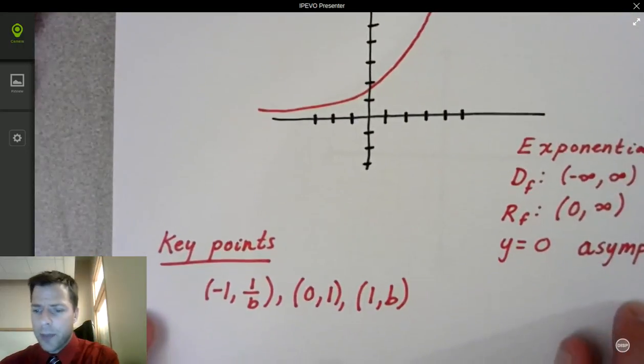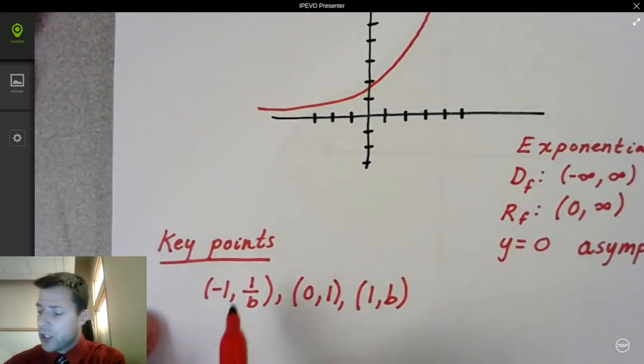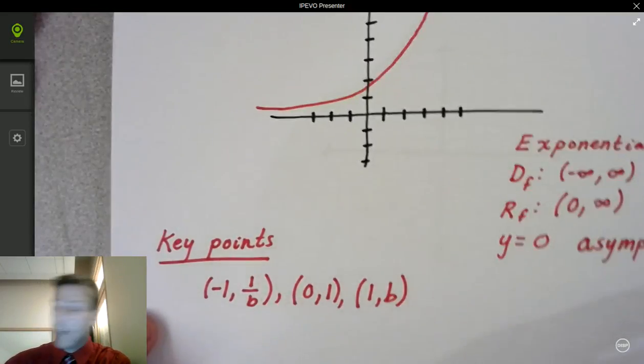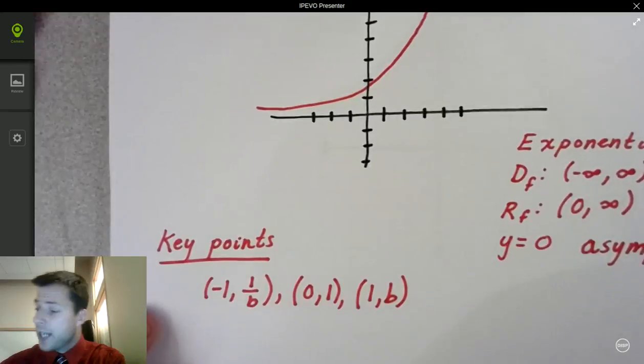Now there are some key points that you can graph just quickly to get the general sketch of that graph: negative 1, comma 1 over b; 0, 1; and 1, comma b. So we can use this idea when we're graphing functions. Let's go ahead and look at two examples that I have for you today.